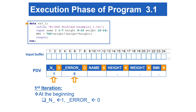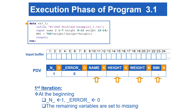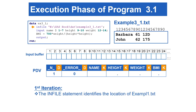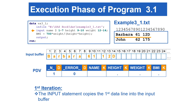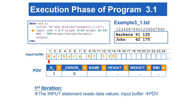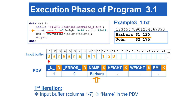Once the compilation phase is completed with no syntax errors, SAS starts the execution phase. At the beginning of the execution phase, _N_ is initialized to 1 and _ERROR_ is initialized to 0 since there is no data entry error yet. The non-automatic variables are set to missing. Next, the infile statement identifies the location of the input file. The input statement copies the first data line into the input buffer. At this point, the input pointer points to the beginning of the input buffer. The input statement then reads data values from the input buffer and writes them to the PDV. The value for the name variable, specified from column 1 to 7, is copied to the name slot in the PDV.